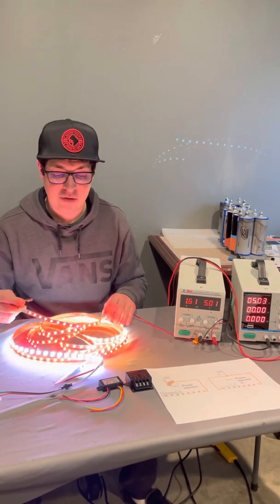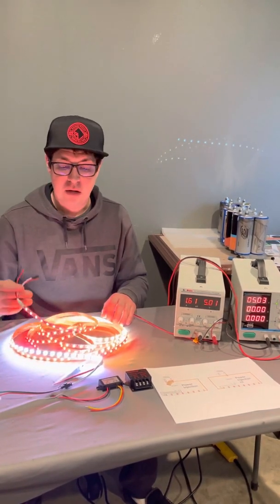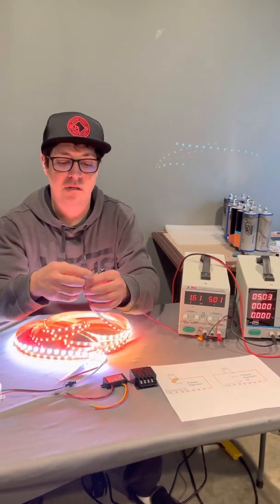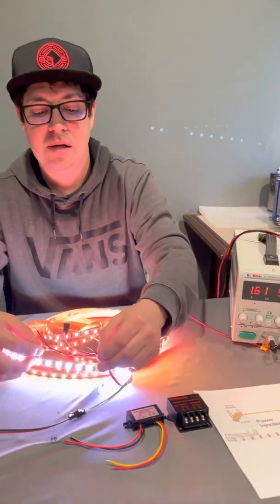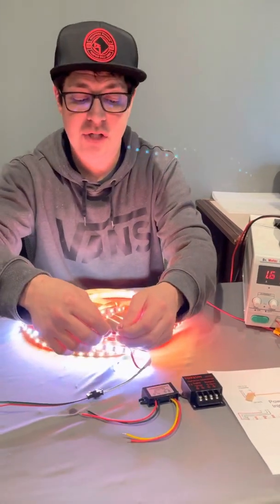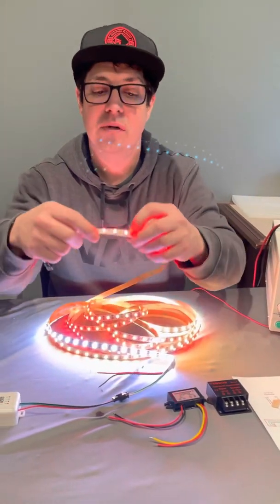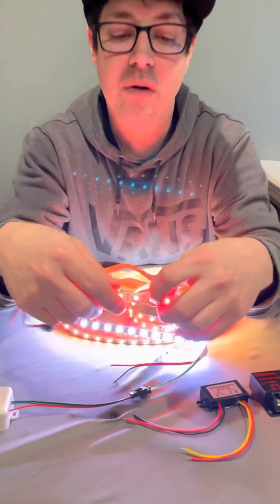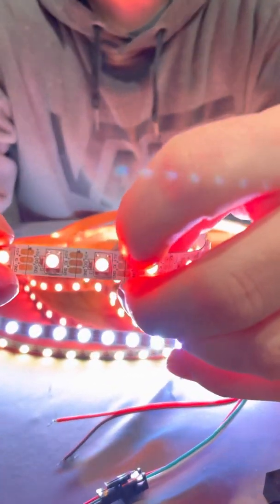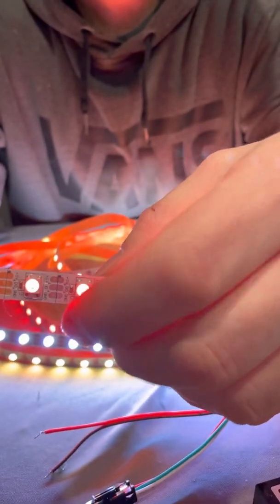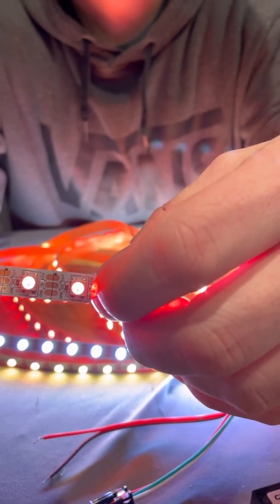So I'm going to tell you about power injection and how to fix this. It's really easy. These strips come with these little whiskers already on them on the ends, and this is for the power injection. You can also solder anywhere you want on the strip, five volts where you've got a ground and a five volt positive.